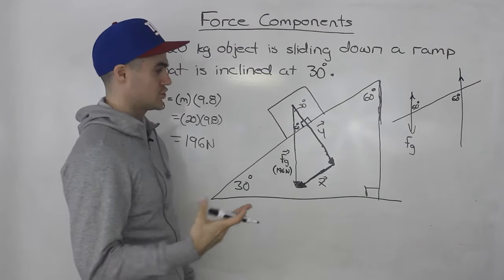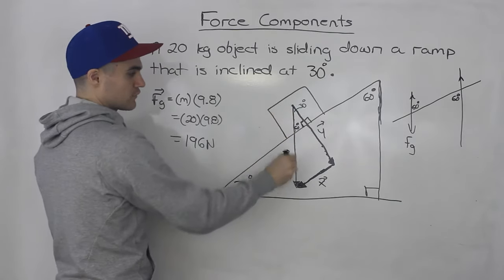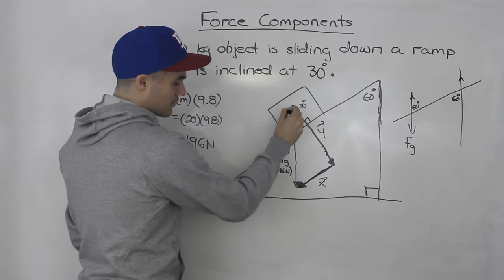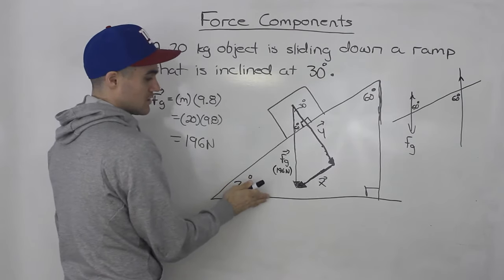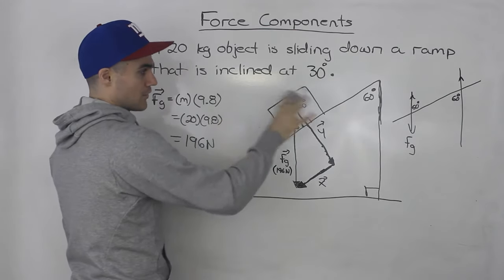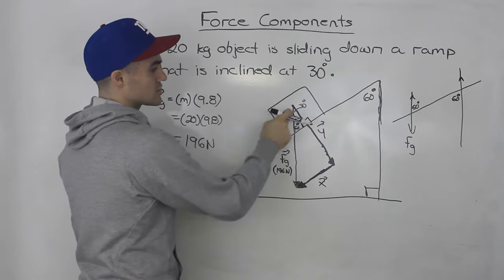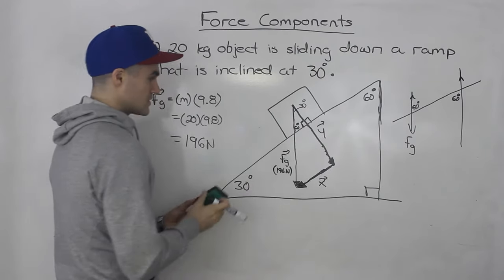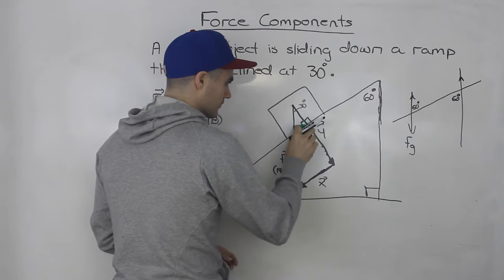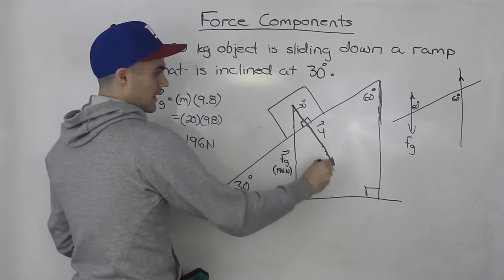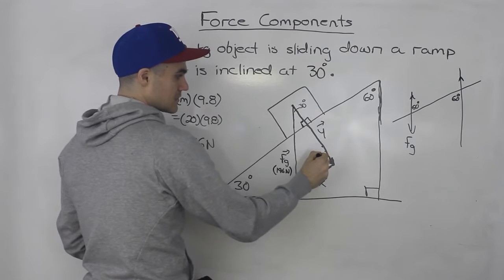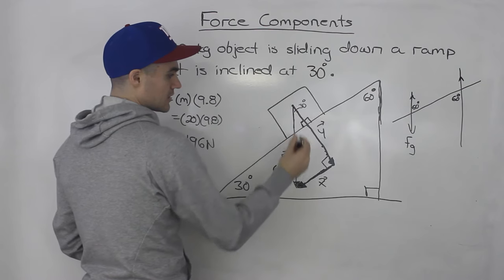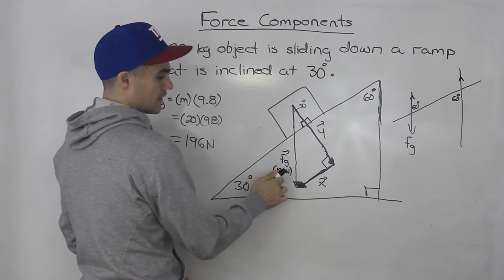Every time you have a question with an inclined ramp and you make this triangle — the force of gravity going straight down, the perpendicular force, and the parallel force — this angle at the top is always going to equal the angle at which the ramp is inclined. I wanted to show you how you get that angle, but you don't have to go through all these steps every time. Just know that this top angle always equals the given incline angle. So we have a right angle triangle with a 90 degree angle and a 30 degree angle, with the hypotenuse being 196 newtons.